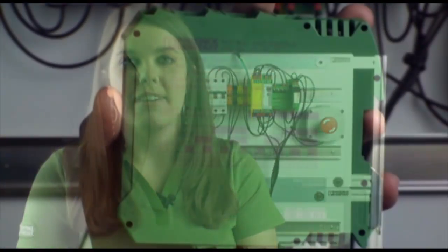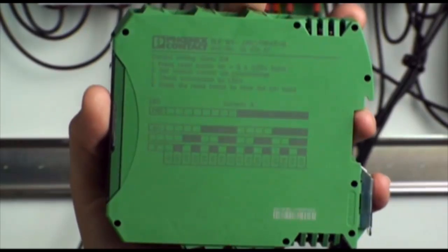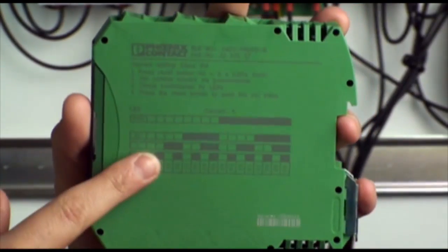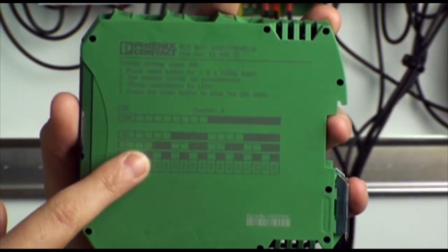Today we're going to look at how to change the overload trip setting on the new Contactron 4-in-1 motor starter. There are 16 current settings for this device. A chart on the side of the 4-in-1 shows these values.